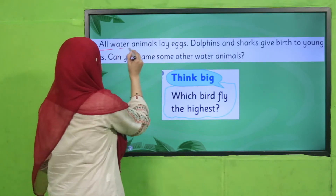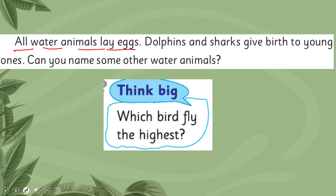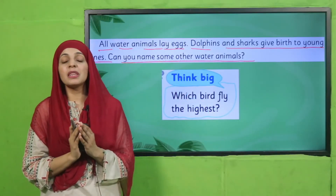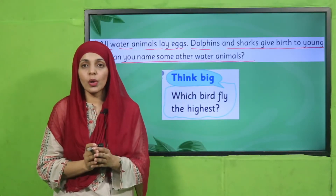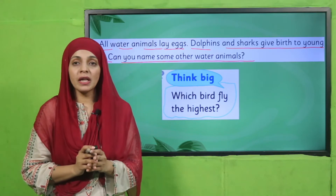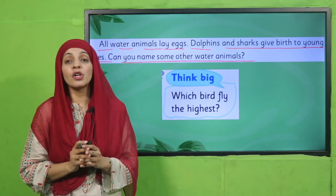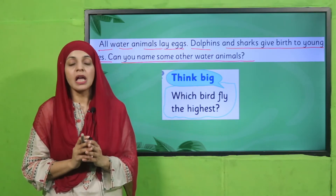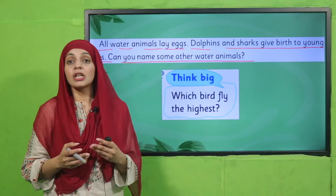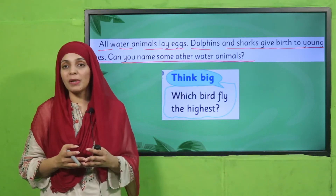Not all water animals lay eggs. Dolphins, sharks, and whales give birth to live young ones. Can you name some other water animals? Most water animals lay eggs, but sharks, dolphins, and whales give birth to live babies. Now you have to name some other water animals that you know about.